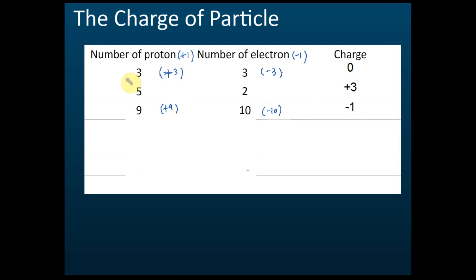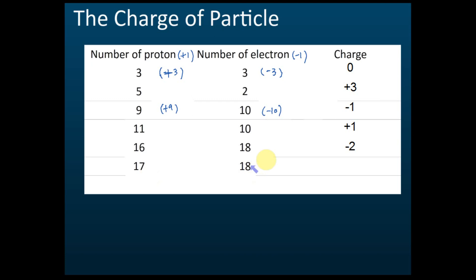Next: eleven protons and ten electrons — the charge is positive one. How about sixteen protons and eighteen electrons? The charge is negative two. Seventeen protons and eighteen electrons — the charge is negative one. And the last one: twenty protons and eighteen electrons — the charge is positive two.